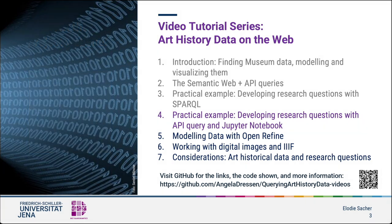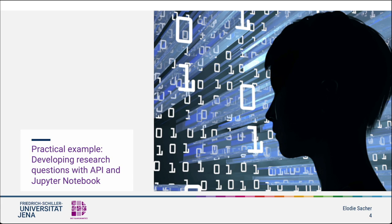The tutorial series contains various methods of querying, modeling and analyzing art history data. The tutorial builds on the knowledge units of the previous series querying museum data on the web. In particular, the video semantic web and API queries is recommended as an introduction to API queries. You can access this introduction via the Digital for Humanities project website.